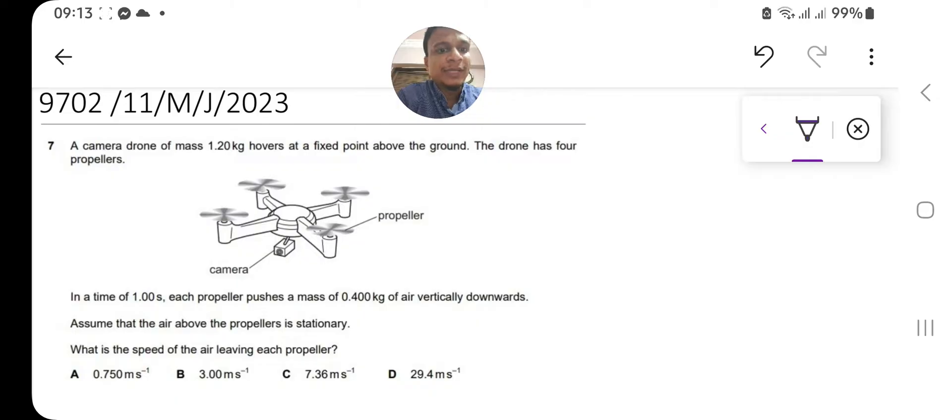The problem says a drone of mass 1.2 kg hovers at a fixed point above the ground. The drone has four propellers - we can see propeller one, two, three, and four.